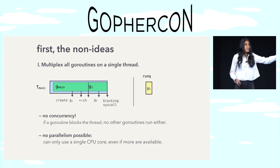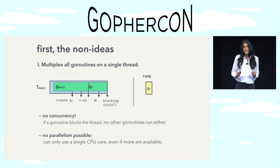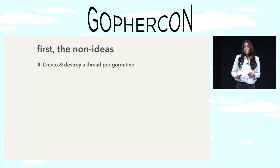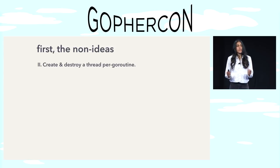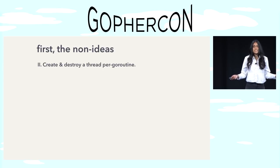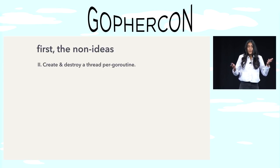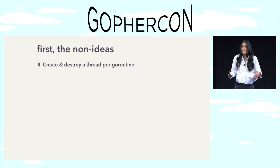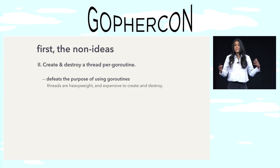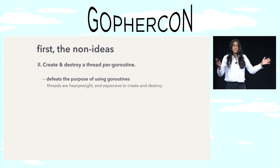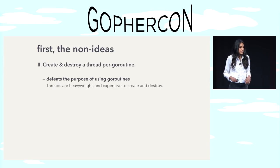At the other end of the spectrum, the other non-idea we can throw out is to create and destroy a thread per Go routine. Why is this bad? We just said that kernel threads are expensive to create and destroy — that's what we're trying to minimize. So doing this would defeat the entire purpose of using Go routines.